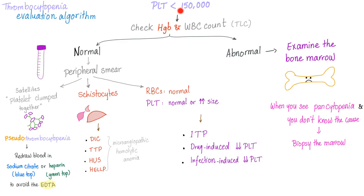Thrombocytopenia evaluation algorithm: when you find thrombocytopenia, the second step is to check the hemoglobin and the white blood cell count. If they are abnormal — which means probably a pancytopenia — examine the bone marrow and do a bone marrow biopsy. When you see pancytopenia and you don't know the cause, biopsy the marrow.